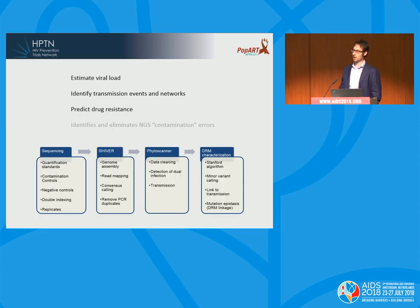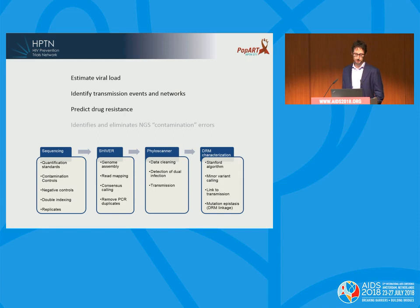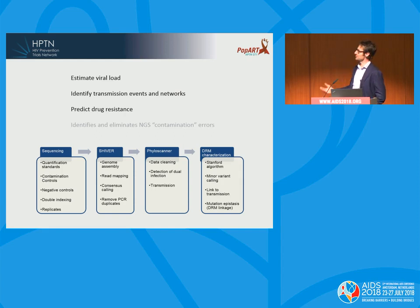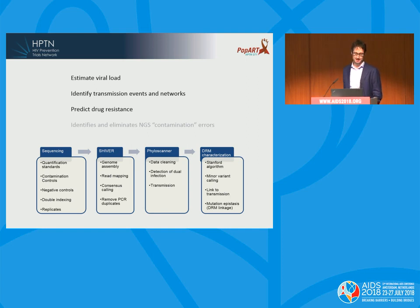We sequence on the Illumina instrument, optimized so that a single technician can manually process 384 samples in a week at a cost of 30 pounds, or about $40 per sample. This is part of a comprehensive pipeline for estimating viral loads, identifying transmission networks, and predicting drug resistance — all within a single test.